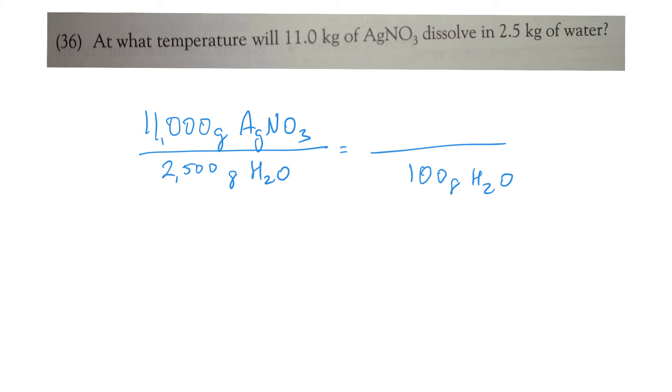So in this problem, they give us 2.5 kilograms, so that's 2,500 grams—we'll put that right there—and then the 11 kilograms becomes 11,000 grams of the silver nitrate. So now we have a ratio: 11,000 over 2,500 equals blank over 100.